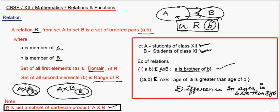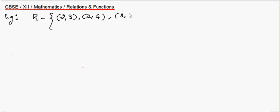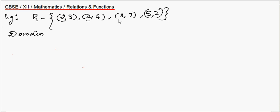Now let's move on to a common example. Say we have a relation given by the set of ordered pairs: {(2,3), (2,4), (3,7), (5,2)}. This is a relation. If I have to write what is the domain of this relation — domain is nothing but the set of all first elements. Because the ordered pair is (a, b) where a is the first element. So if you pick up all the first elements: from (2,3), (2,4), (3,7), (5,2) — in the first and second ordered pairs, 2 appears twice, so write 2 once. Then 3 and 5. So the domain is {2, 3, 5}.